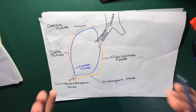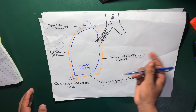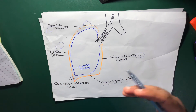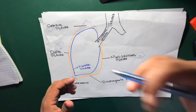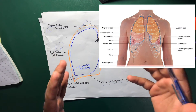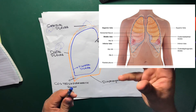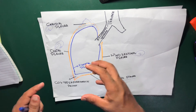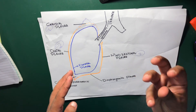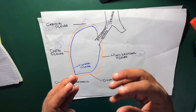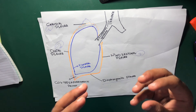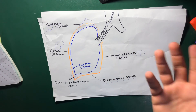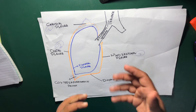Another term is the costomediastinal recess. It is also a small space at the border between the mediastinal pleura and the costal pleura. The word costomediastinal means between the costal pleura and the mediastinal pleura — there is a space called the costomediastinal recess. It also assists in inspiration while breathing deeply.